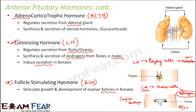So the follicle stimulating hormone helps the ovarian follicles to grow and develop, after which ovulation occurs — controlled by the luteinizing hormone — and then the formation of the corpus luteum is again supported by FSH.